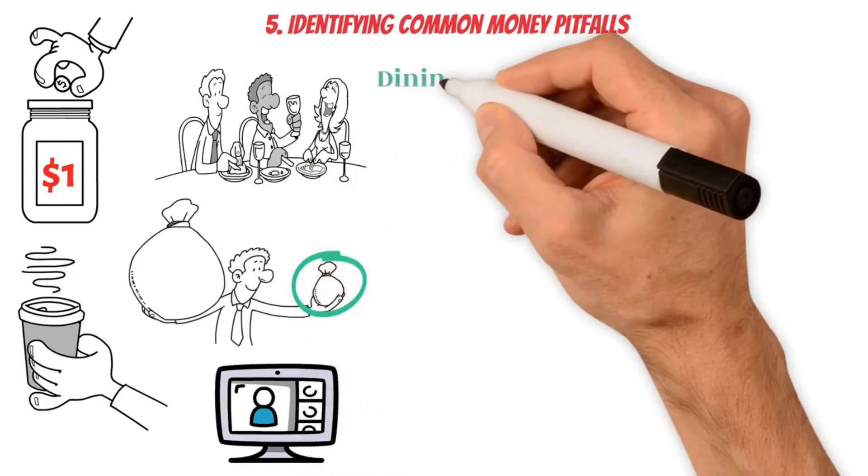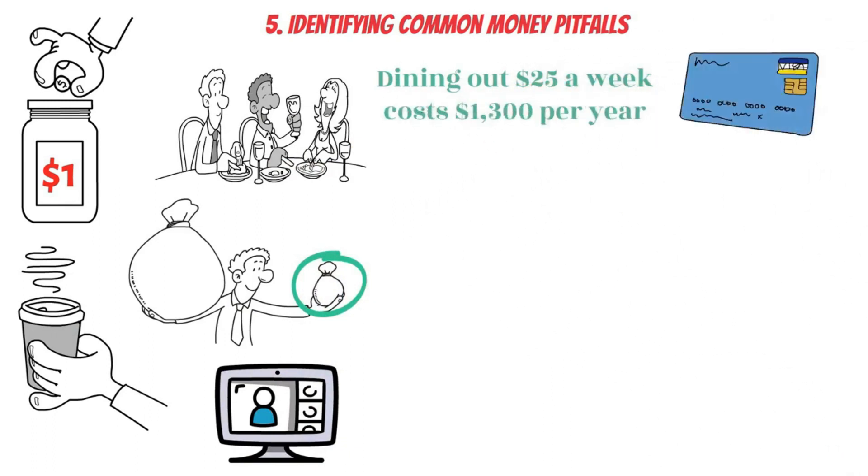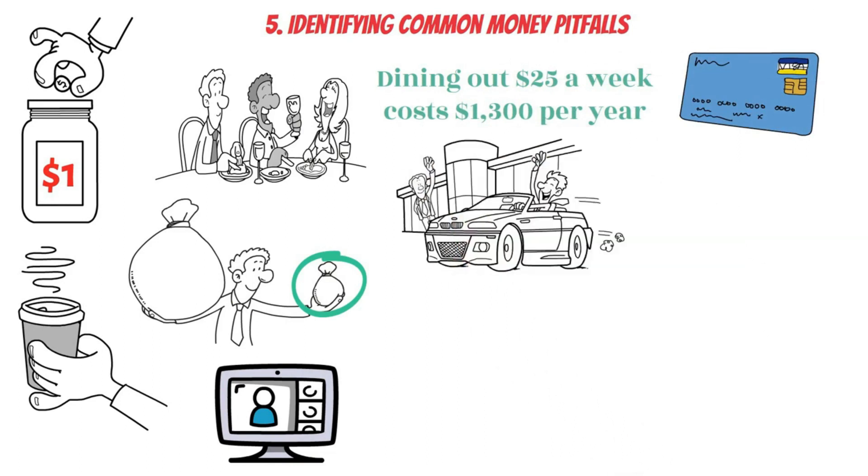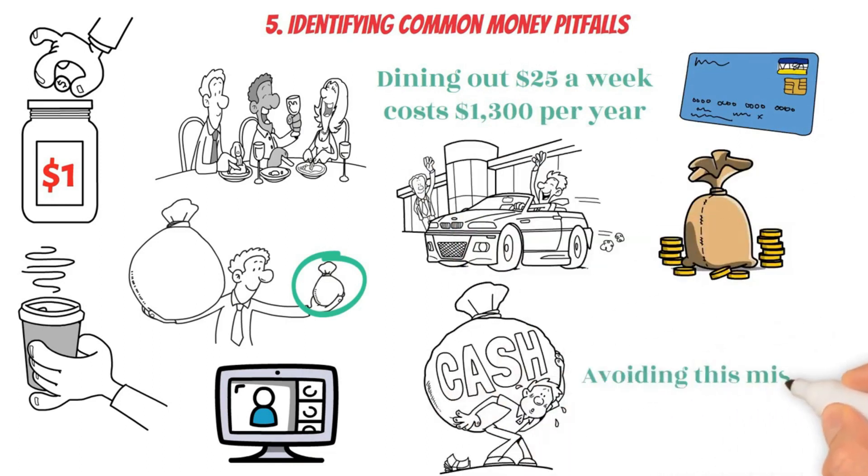Dining out $25 a week costs $1,300 per year, which might go toward an extra credit card, auto, or numerous payments. If you're close to bankruptcy, avoiding this mistake is crucial.